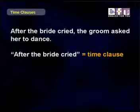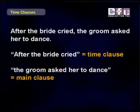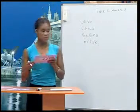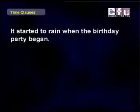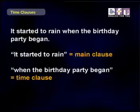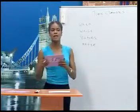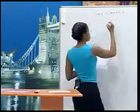Next example: After the bride cried, the groom asked her to dance. After the bride cried is the dependent clause, or time clause. It's dependent on the main clause — the groom asked her to dance — which can stand on its own. Next example: It started to rain when the birthday party began. It started to rain is the main clause. When the birthday party began is the time clause.